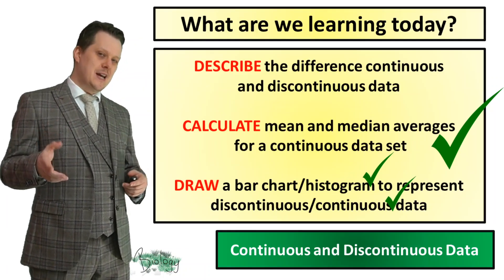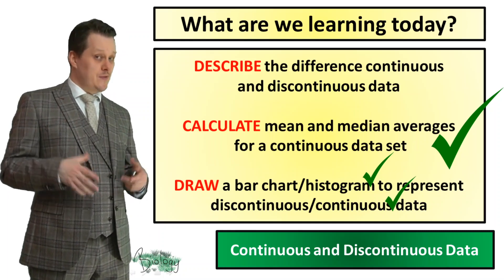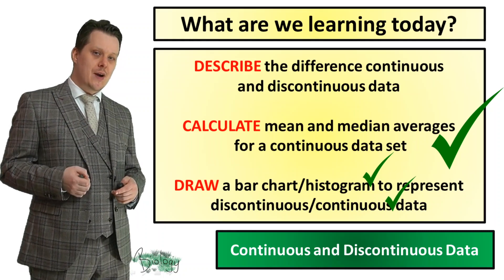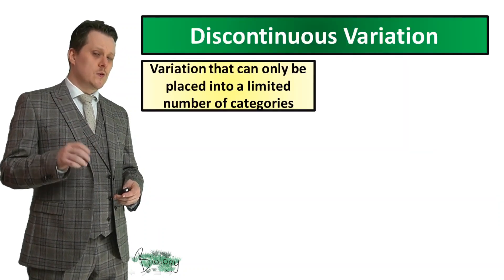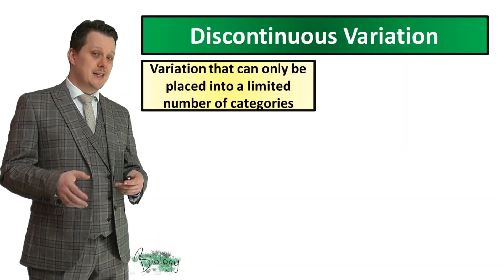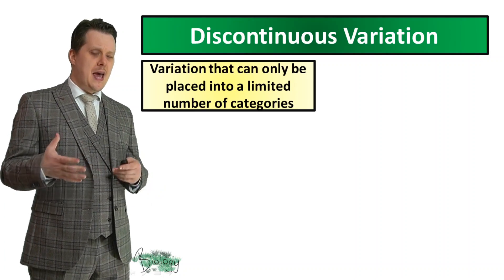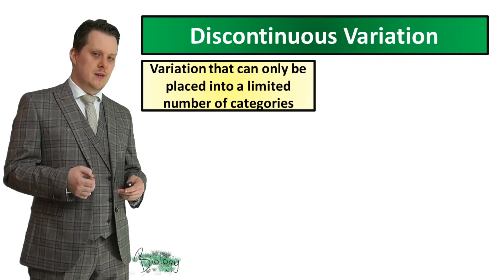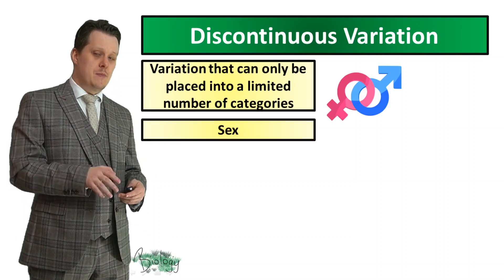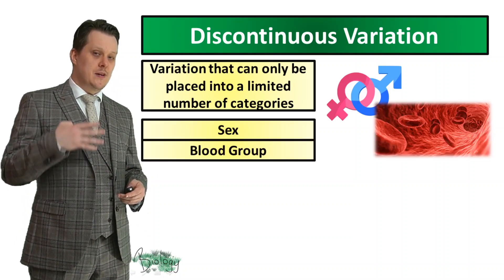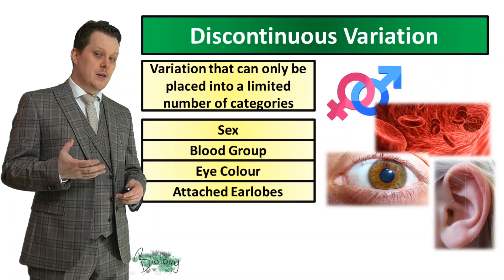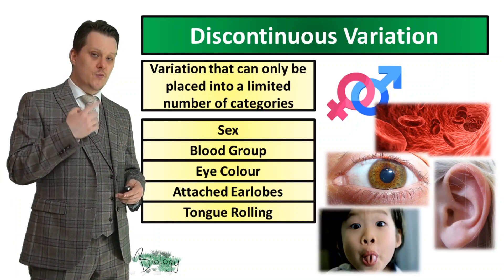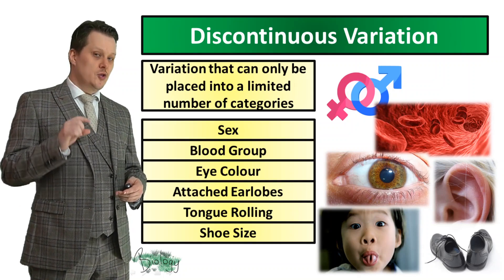So we've calculated mean and median averages and plotted a histogram for continuous data. Next, we need to look at discontinuous data — this is any variation that can only be placed into a limited number of groups. Things like sex (male or female), blood group (there are only four), eye colour, whether or not your earlobes are attached, whether or not people can roll their tongue, and shoe size.